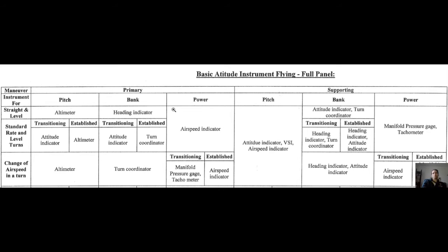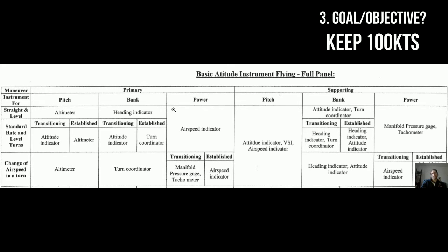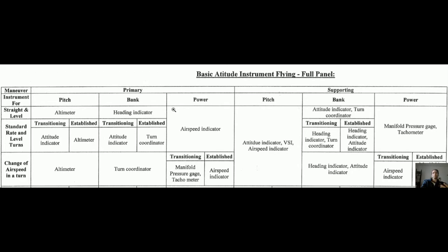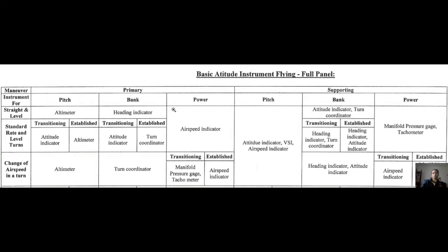What is our primary for power? Well, again, the instruction was cruise at 100 knots. So we want to keep that needle as steady as possible at 100 knots. So what would we look at? Very simple — airspeed indicator. Most direct means of power for this part.